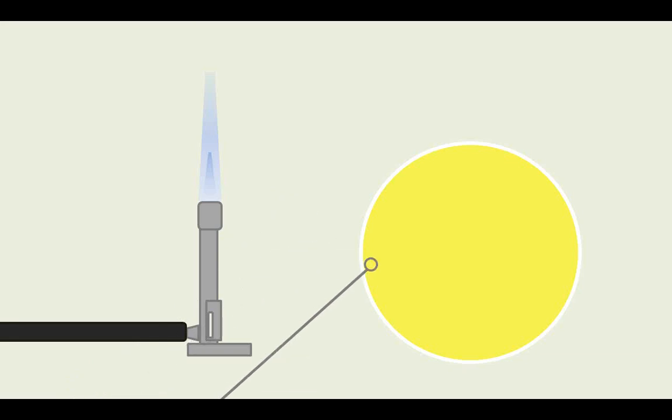Begin by taking a loopful of your sample and spreading it across the surface of the plate in a zigzag motion.